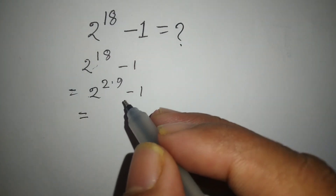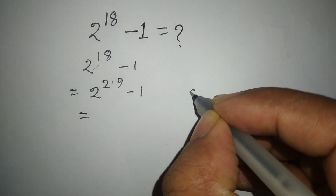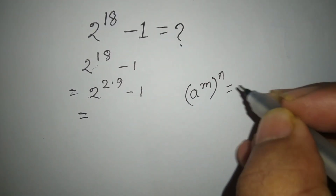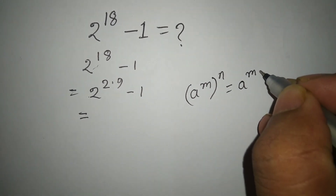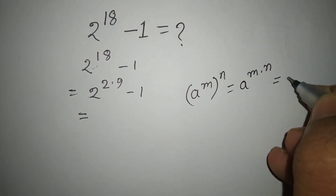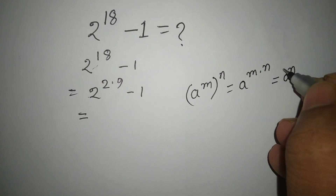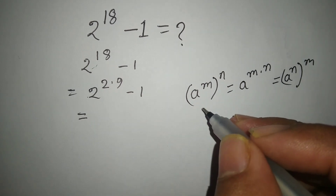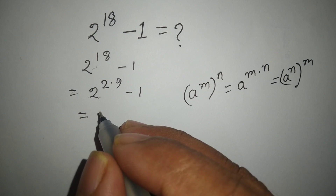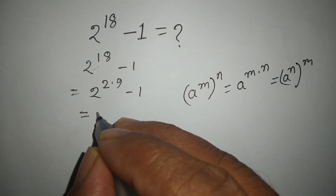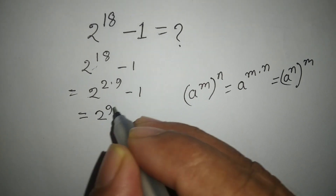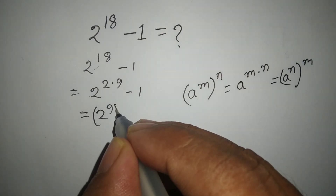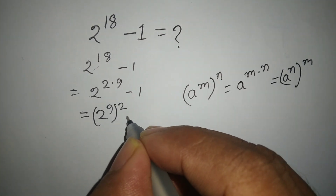Now we will apply a formula. This formula is: a to the power m, whole power n, equals a to the power m dot n, equals a to the power n, whole power m. By applying this formula, we can write 2 to the power 9, whole square, minus 1.